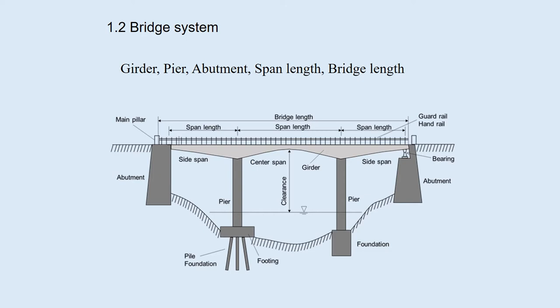The pier needs a foundation at its base. The distance between the bearings is called the span length, and the bridge length is the total length of a bridge. When a bridge is supported by more than two piers, the middle part is called the center span and the end parts are called side spans. The height between the girder bottom and the water level is called clearance, which is set so that ships can pass through.